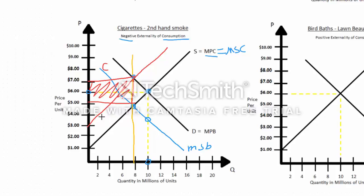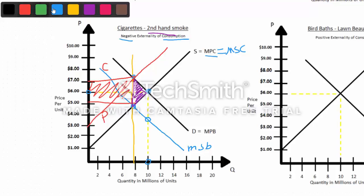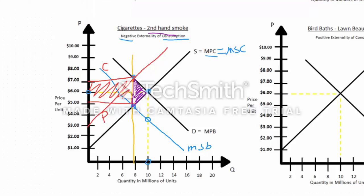We still have consumer surplus and producer surplus, but what's exciting is this gets us to the efficient equilibrium point. We're accustomed to thinking of a tax as having a deadweight loss — this triangle would be the deadweight loss because of a decrease in units sold. But that's the beauty of it: in this case, there's actually already a deadweight loss occurring because we are over-consuming, not taking into account the costs — namely the secondhand smoke. So this is called a corrective tax because it's fixing what was otherwise a market failure, an externality.